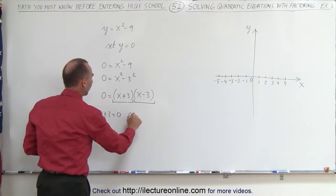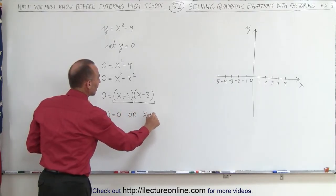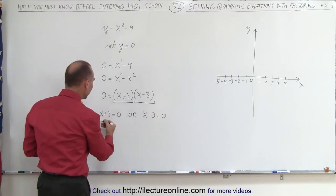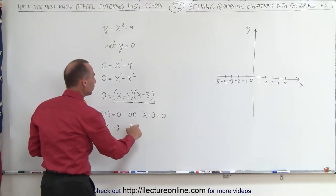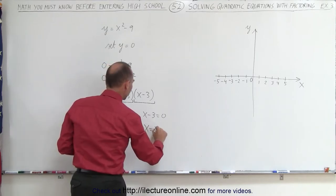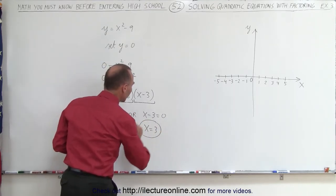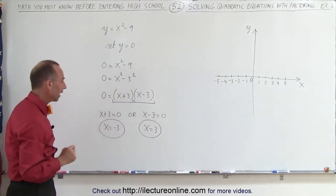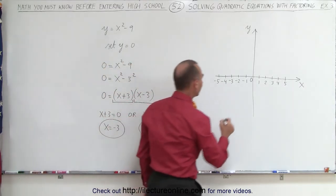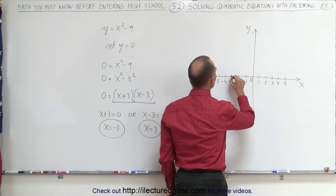And now we have two binomials that are multiplied together, and in order for two quantities to be multiplied together and give 0, that means either one or the other must be 0. This means that either x plus 3 must equal 0 or x minus 3 must equal 0.